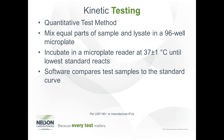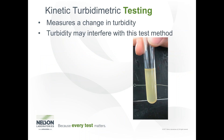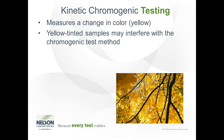Kinetic testing is a quantitative test method. You mix equal parts of sample and lysate in a 96-well microplate, and it is read with an incubating photospectrometer. The test runs until the lowest standard reacts, and the software then compares the unknown reaction times of the sample to the known reaction times and endotoxin concentrations of the standard curve. Kinetic turbidimetric testing measures a change in turbidity — samples go from clear to a milky white color as the reaction takes place. Samples that are inherently turbid can interfere with this method. The chromogenic test method uses a chemically modified lysate that changes from clear to yellow instead of clear to turbid, but yellow-tinted samples may interfere with the chromogenic test method.